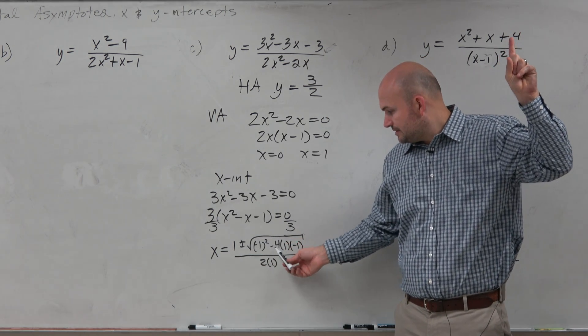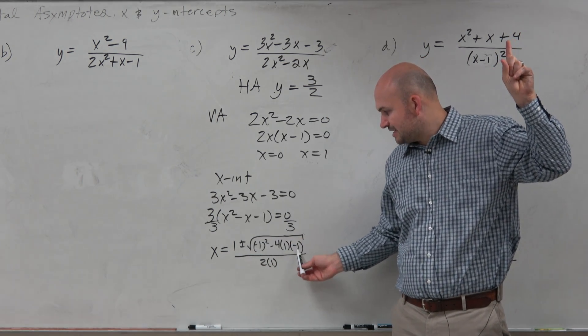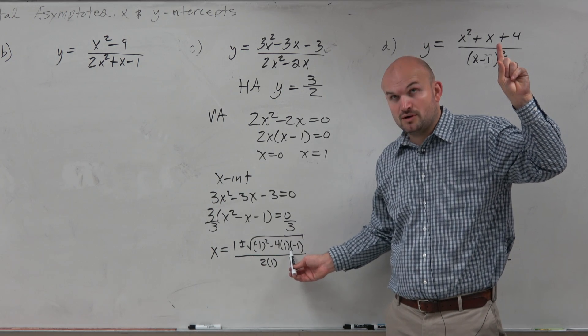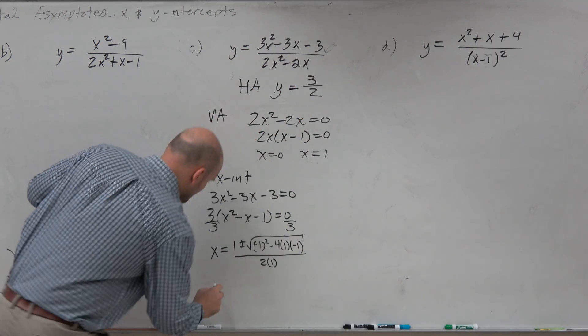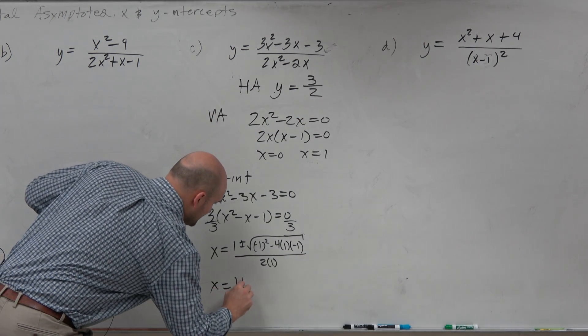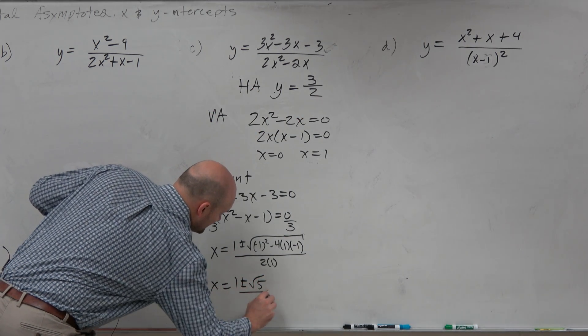OK, I'm just going to hold that up. Negative 1. Negative 4 times 1 times negative 1 is going to be a positive 4. OK, 4 plus 1 is 5. So x is equal to 1 plus or minus the square root of 5 divided by 2.